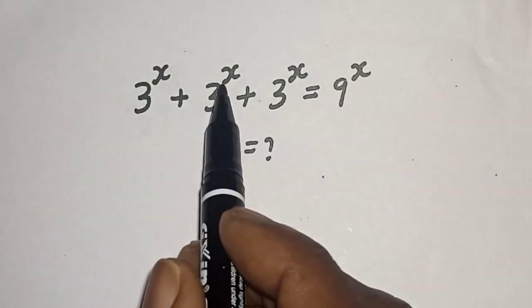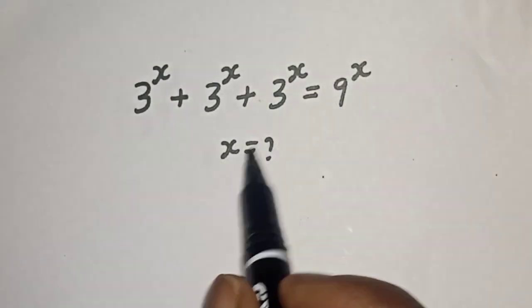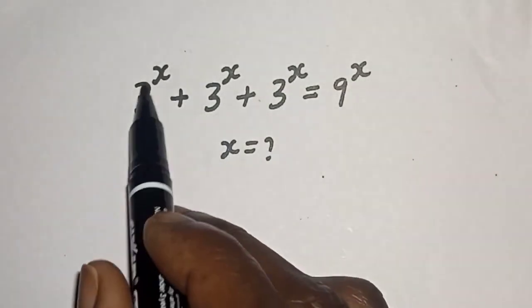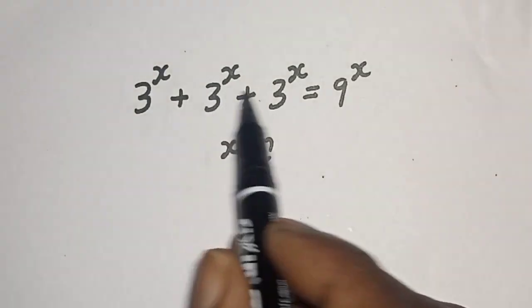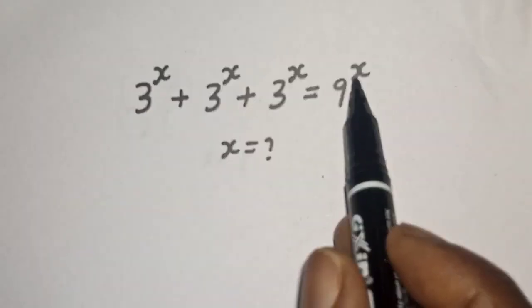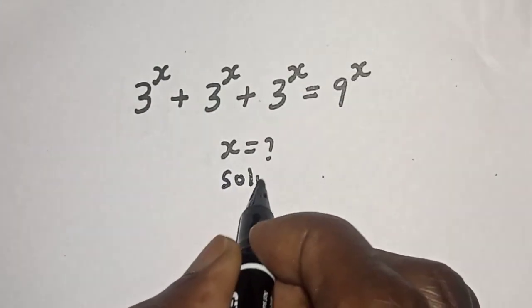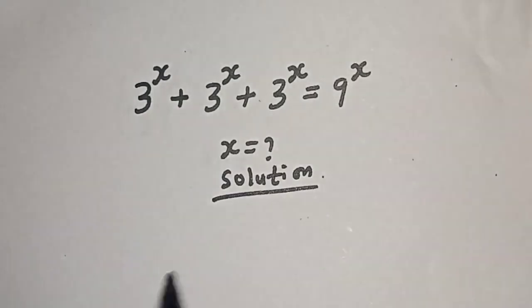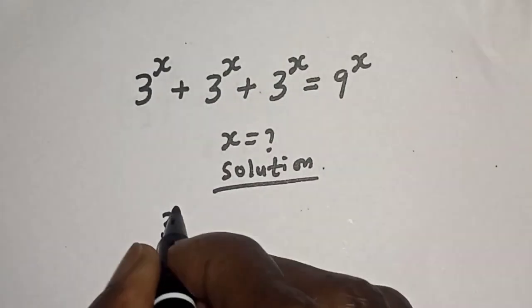3 raised to power s, plus 3 raised to power s, plus 3 raised to power s is equal to 9 raised to power s. What is the value of s? Hi everyone, welcome to my class. In this class we quickly want to find the value of s from this equation. But before we proceed, please don't forget to like, share, comment and subscribe.